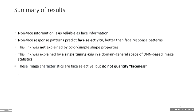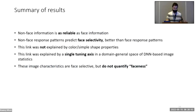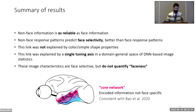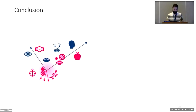In summary, the response structure for non-face images is reliable and predictive of face selectivity. This link was not explained by simple intuitive properties, but by the more complex image statistics encoded in deep neural networks — statistics that quantify face-selective characteristics without quantifying 'faceness.' In terms of what is encoded, the core network of face patches does not appear to be face-specific in the sense of only responding to attributes applicable to faces. This is consistent with previous work suggesting that macaque IT cortex is best understood as a domain-general map of object representations.